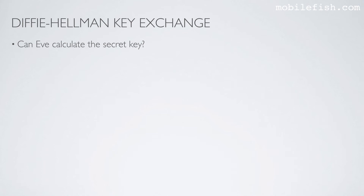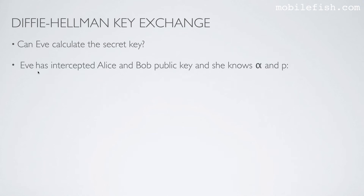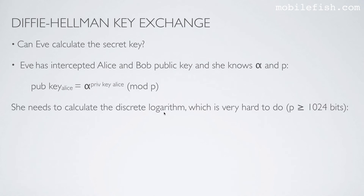The question is: can Eve calculate the secret key? Eve is evil and has intercepted Alice and Bob's public keys, and she also knows the generator and the modulus. So let's take Alice's public key — this is the equation. She needs to calculate the discrete logarithm, which is very hard to do, especially if the modulus has 1024 bits or bigger.